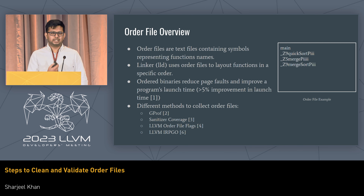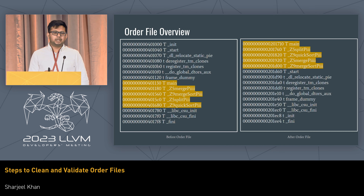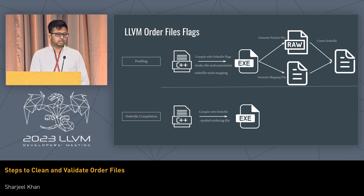If you use an order file, you can get a binary where the function layout changes. It's typically most useful for startup time, because you want an app to launch very fast. This is an example of one of the cases: there's a profiling scheme, and then there's an order file at compilation time. Typically, the compilation step is the same — they use a symbol ordering file.